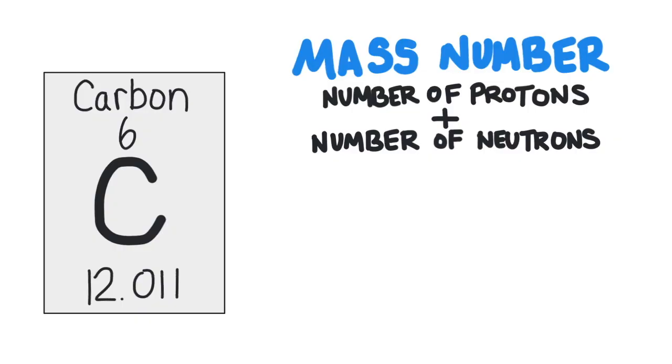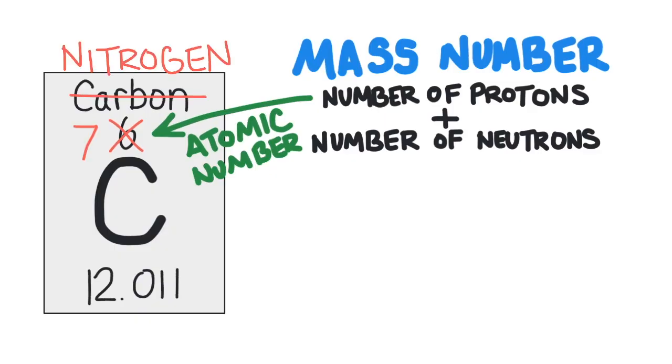If you change the number of protons, then you've changed the element. The number of protons is described by the atomic number. Carbon has 6 protons. If you added another proton to a carbon atom, it would have 7 protons and it would no longer be carbon, it would be nitrogen.